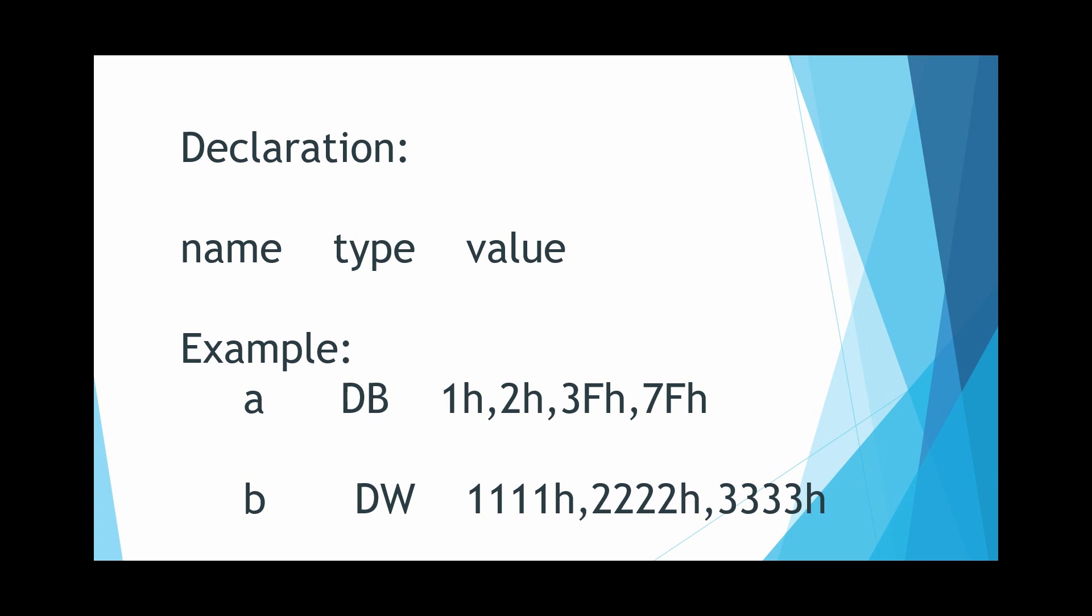As we have already seen how to declare a variable with data type and value, here also we have similar steps. We have two examples: A is our array and B is another array.